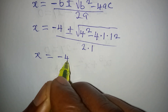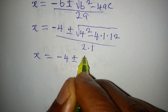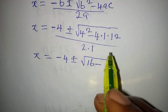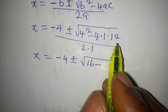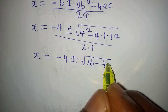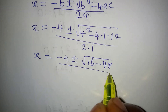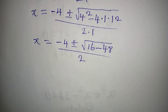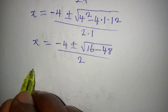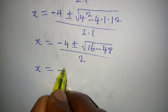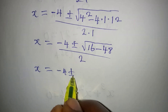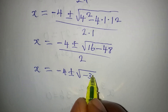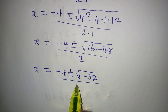Continuing, x = (−4 ± √(16 − 48)) / 2. Computing: 16 − 48 = −32, so x = (−4 ± √(−32)) / 2.